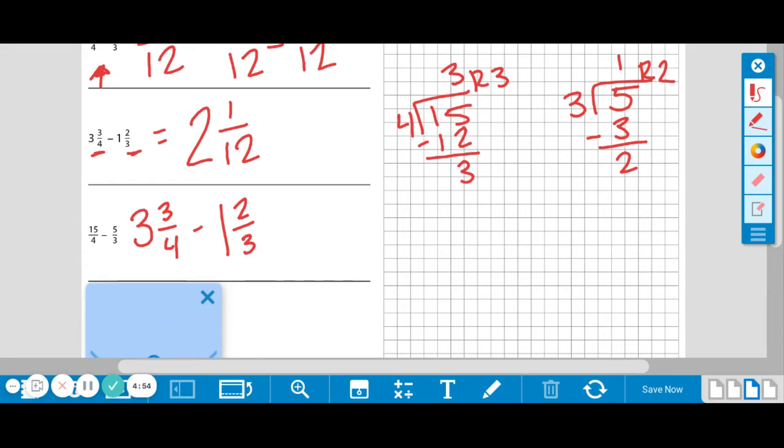So our mixed number is 1 and 2 thirds. If we look, this is the same problem as above. So that is all the work you really have to do rather than copy down your solution from above. Great job. Let's keep going.